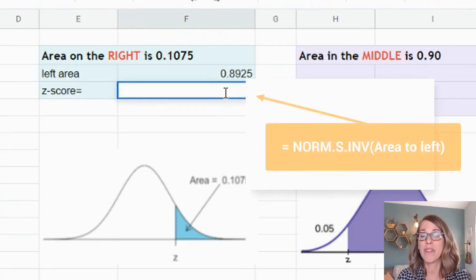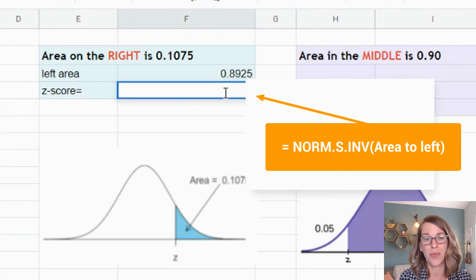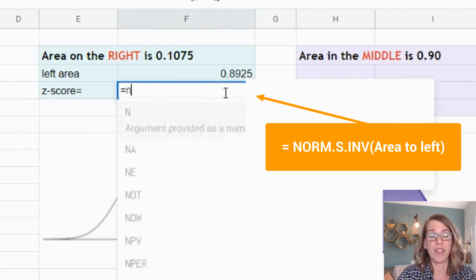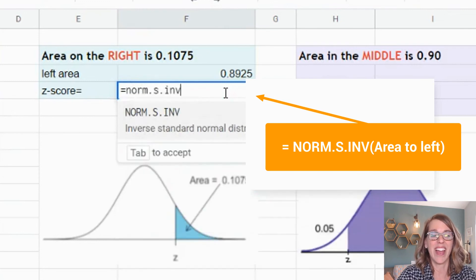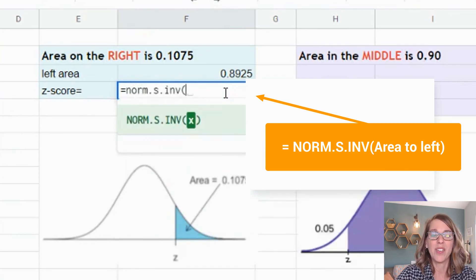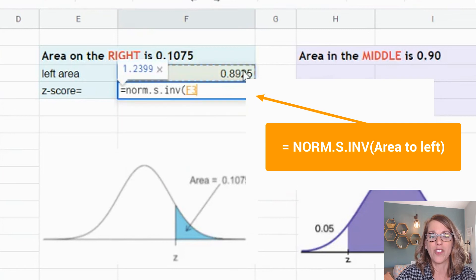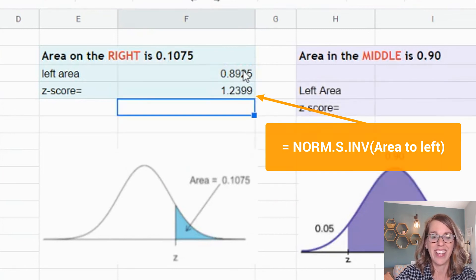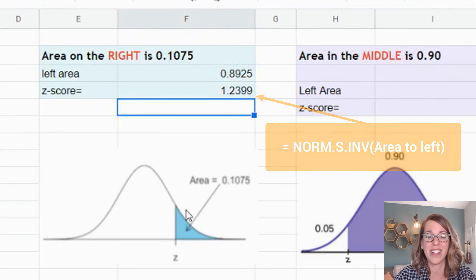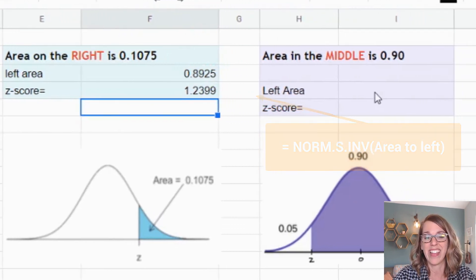Now that I've got the area from the left, which is what my Excel spreadsheet or Google Sheets wants, I can go ahead and do my inverse norm. So I'm going to do NORM.S.INV parenthesis. You can either type that value in now or just grab it by clicking on it and then hitting enter. We get that z-score of, it's positive because it's to the right, 1.2399.